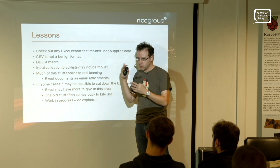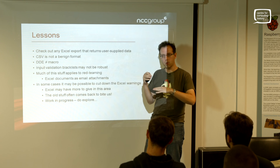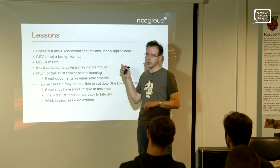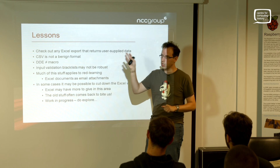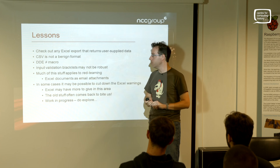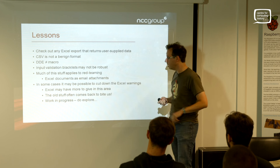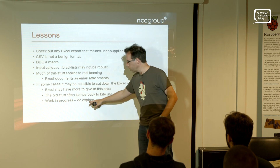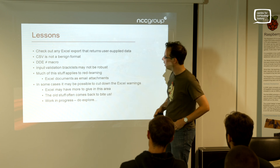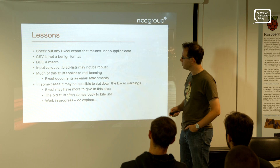Much of this applies to red teaming - I've tried to focus on the scenario where you've got a web app with Excel export and you're assessing its security. But if you're doing red teaming and phishing and sending spreadsheets to people by email, a lot of this could have some import. We've seen in some cases it is possible to cut down the Excel warnings - very much work in progress, but with some limited success using Internet Explorer or Firefox DDE.